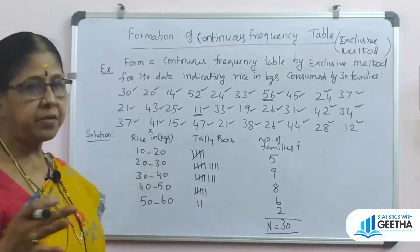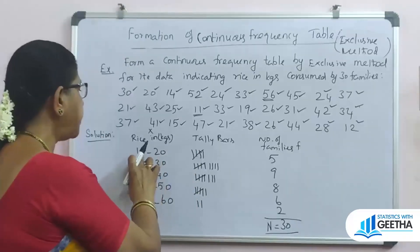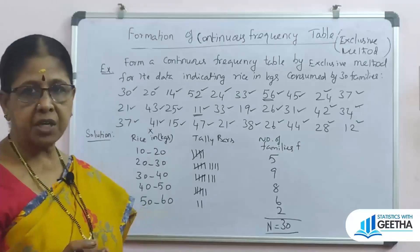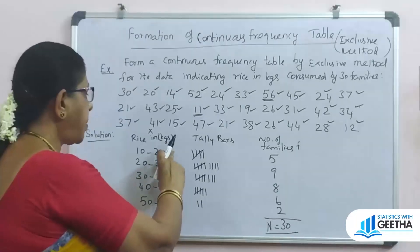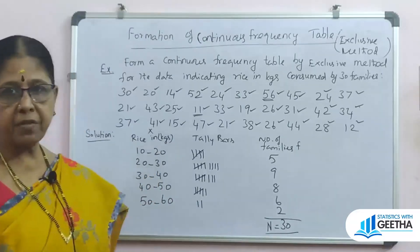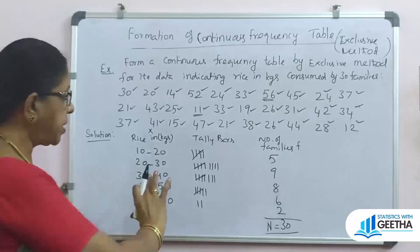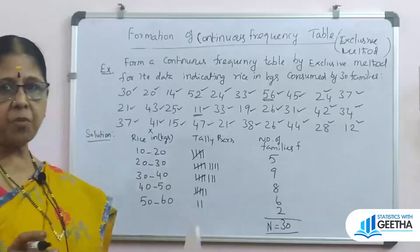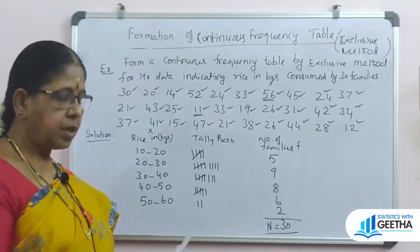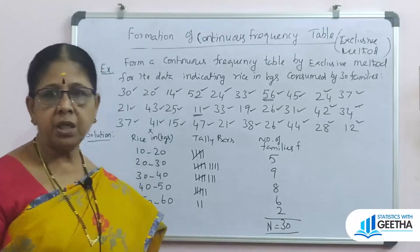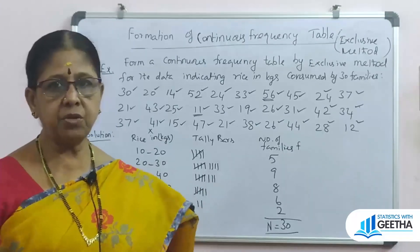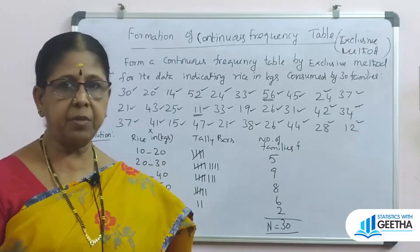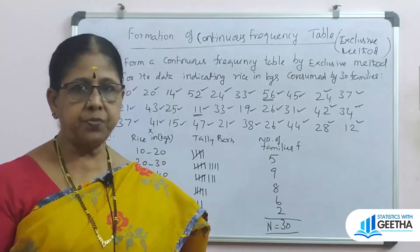As explained in the video, in the exclusive method, the lower and upper limits are continuous — one class's upper limit becomes the next class's lower limit. So there is a class interval frequency. This is the formation of continuous frequency distribution by inclusive and exclusive methods. Thank you.